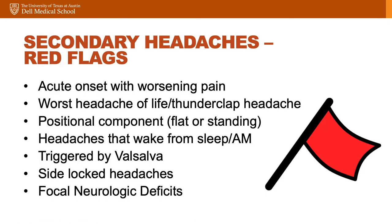As I complete the history and physical, I'm really trying to think about red flag symptoms that would point me to a secondary headache condition requiring further imaging. These include: acute onset with worsening pain in a short period of time; worst headache of life or thunderclap headache, which makes you think about subarachnoid hemorrhage; a positional component suggesting CSF pressure issues; headaches that wake patients from sleep or are triggered by Valsalva, also a sign of increased ICP; side-locked headaches, which can signal a pituitary abnormality or meningioma; or any focal neurologic deficit.